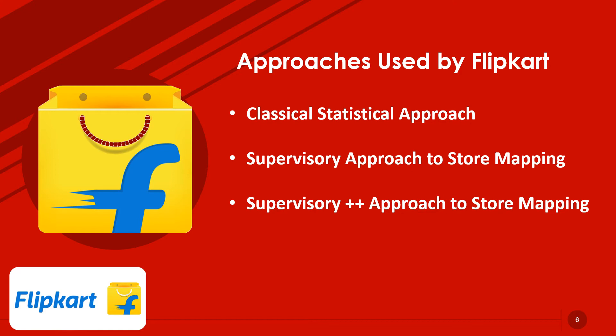The second approach is the supervisory approach to store mapping. In this, a query can come in a very general way — for example, 'Avengers Endgame.' It could be a fan of the movie or characters who is looking for Endgame-printed products. The category options can include a poster for room, mobile cover, bottles, pencil box, bed sheets, books, and more.